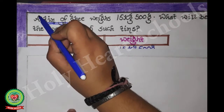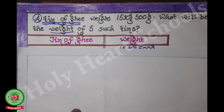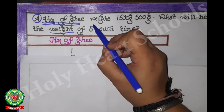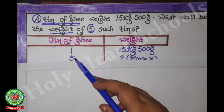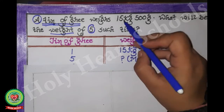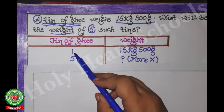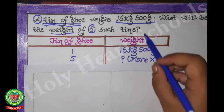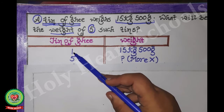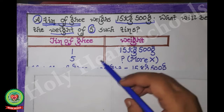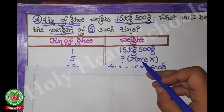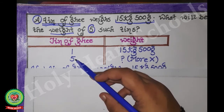Tin of ghee on the left hand side and weight on the right hand side. Firstly, how many tins are given? 'A' means one, so we will write down one. Second time, how many tins are given? Five, so we will write five below one. The weight of one tin of ghee is 15 kilograms 500 grams, so in front of one we will write 15 kg 500 grams. Five is greater than one, so we will do multiply.